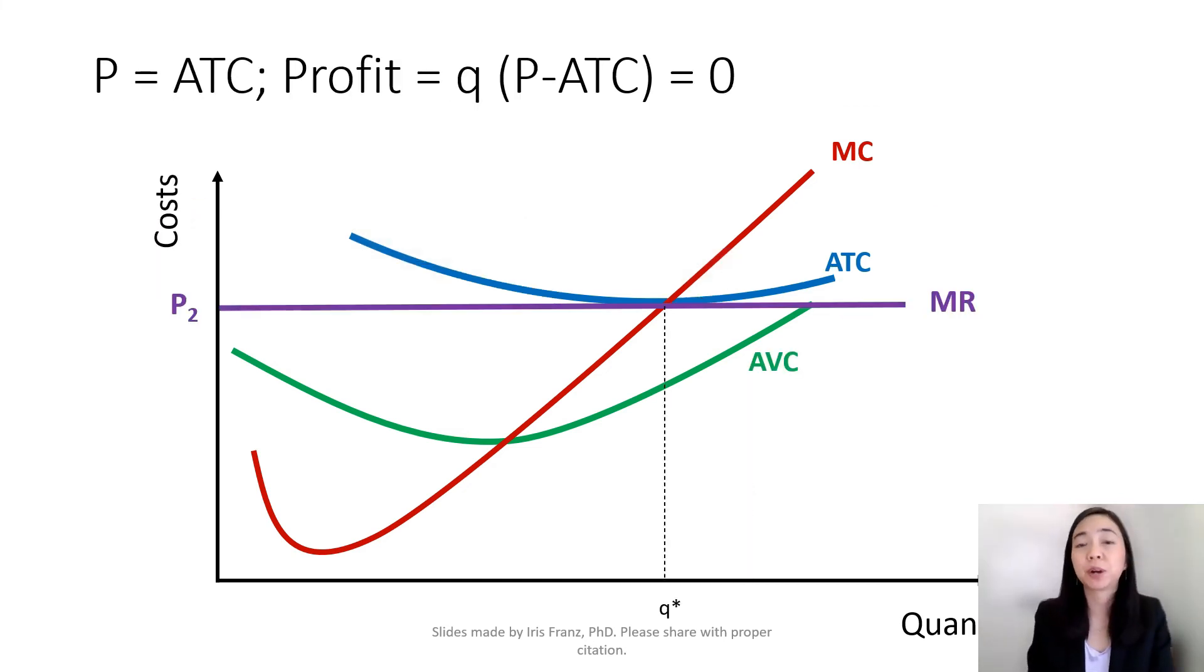Now what happens if price drops to P2 such that your price is equal to average total cost? Well, in this case, because your profit is equal to quantity times price minus average total cost, and if your price is equal to average total cost, that means your economic profit is equal to zero.